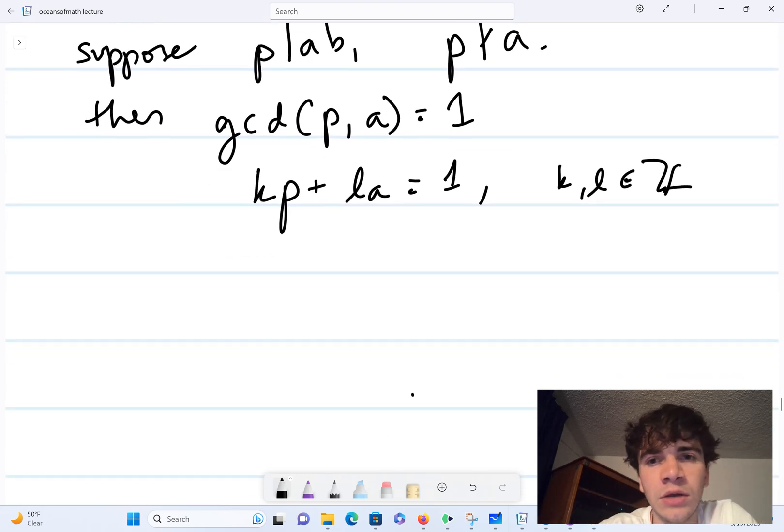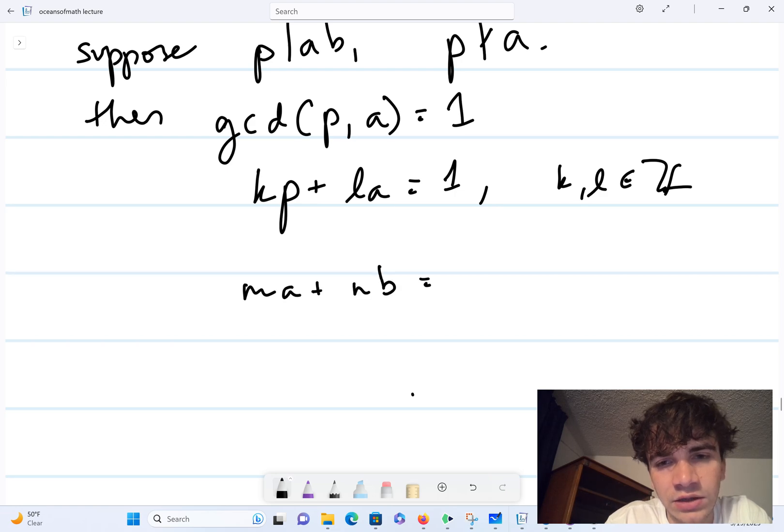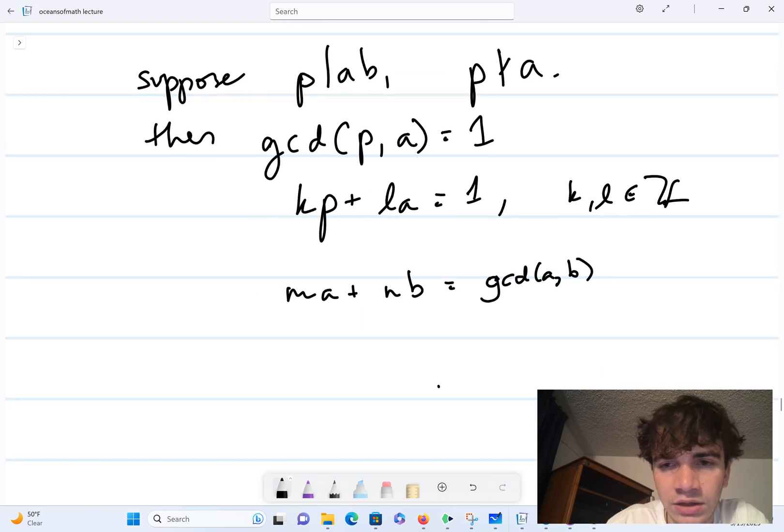And this is a very important kind of algorithm that you learn in basic introductory number theory class—you can always find integer solutions to the equations ma plus nb is equal to gcd of a, b. And I believe it's like Euclid's algorithm for finding these integer solutions.